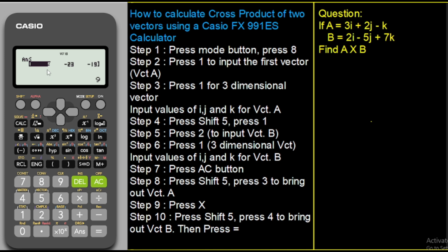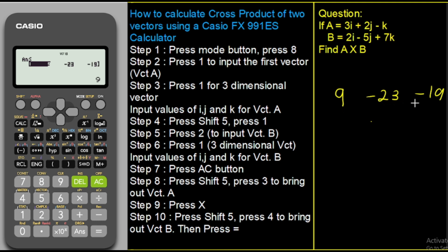Our answer is 9, minus 23, minus 19 — which means 9I minus 23J minus 19K. In the calculator it is displayed as 9, −23, −19. To present the answer properly in component form, we write it as 9I − 23J − 19K. This is our answer for the cross product A × B.